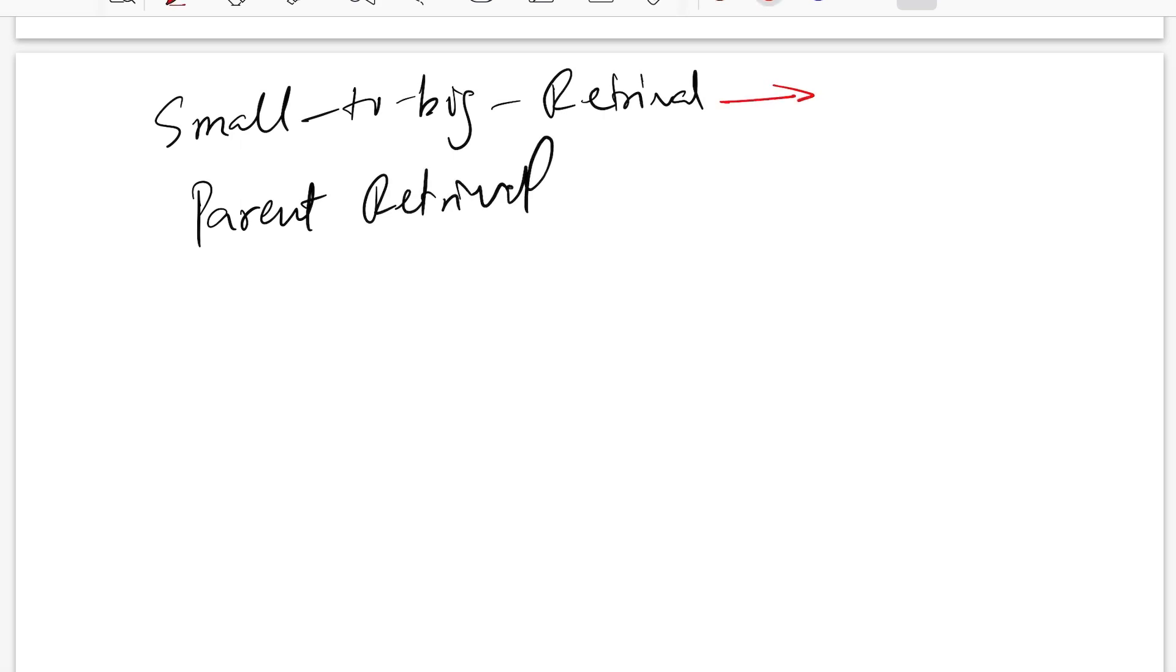You'll find this terminology with Llama Index library and this one with LangChain. So it's one thing having different names. Let's start off with first understanding what the limitation of normal RAG system is and why do we need parent retrieval or small-to-big retrieval systems.